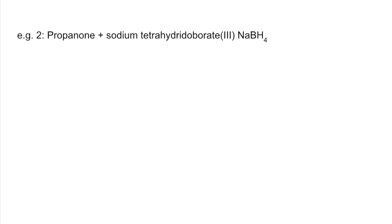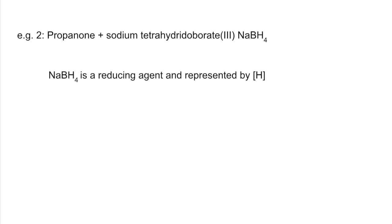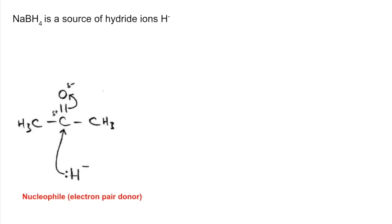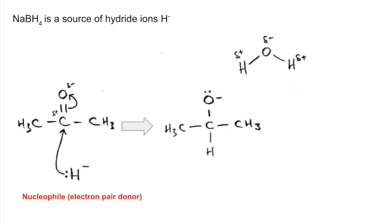The second example is very similar: propanone with NaBH₄. The reducing agent is again represented as [H]. Using the oxygen sandwich — two H's either side of the O — we get C-H-O-H, a secondary alcohol: propan-2-ol. The mechanism is virtually the same: the hydride ion donates a pair of electrons to the slightly positive carbon, repelling the pi electron pair onto the oxygen to give the unstable intermediate. A water molecule then grabs the hydrogen, giving the secondary alcohol product.